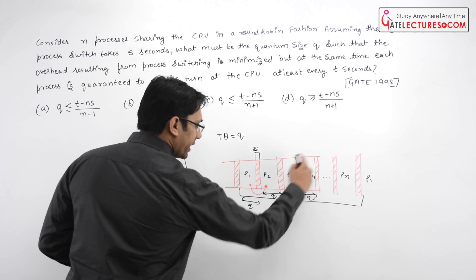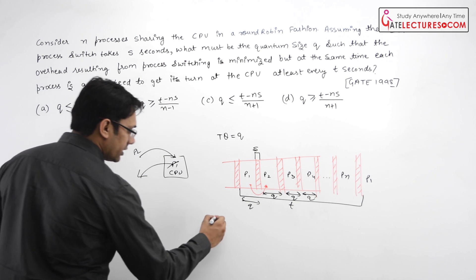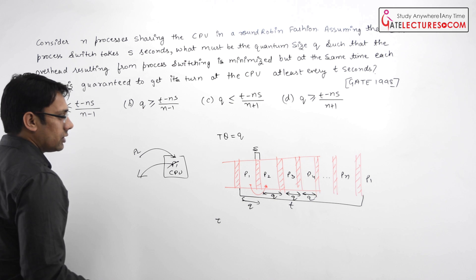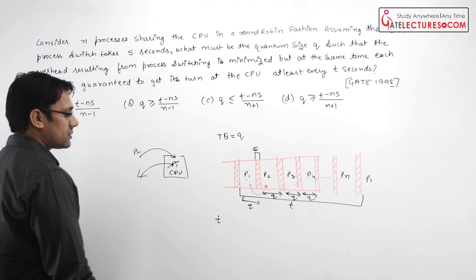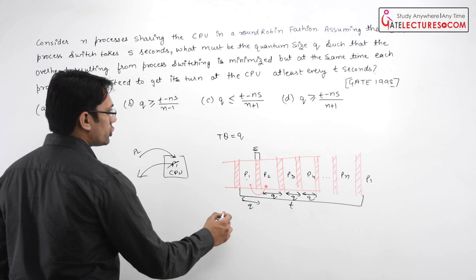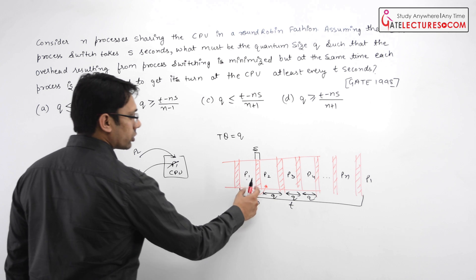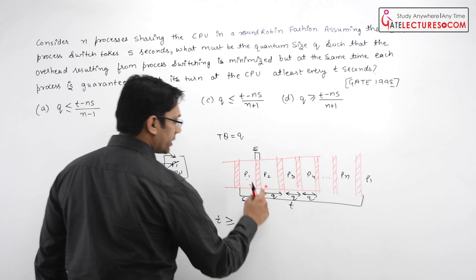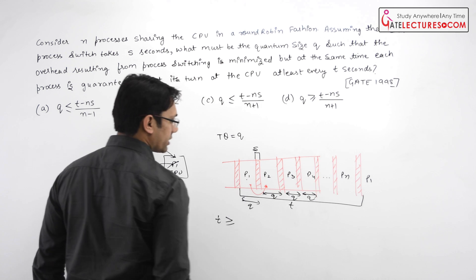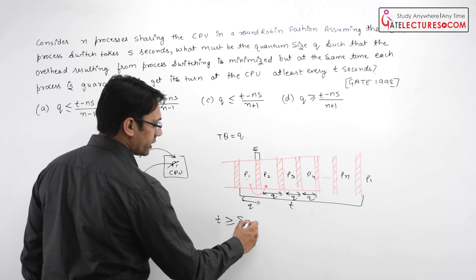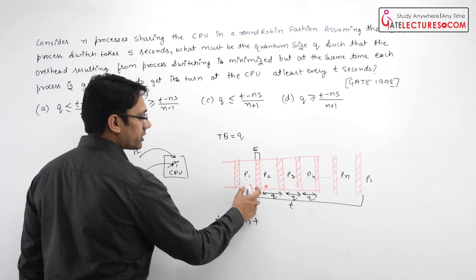We can see by this figure that T — this process P1 should get its turn after every T seconds. That means T should be greater than or equal to the total time from here to here. The total time is S repeated n times, so S into n, plus the time quantum Q — how many times? n times, so Q into n. Wait, it is Q into n minus 1.